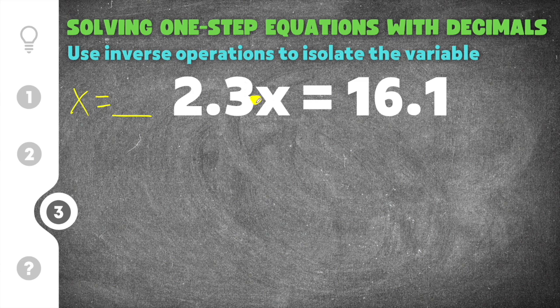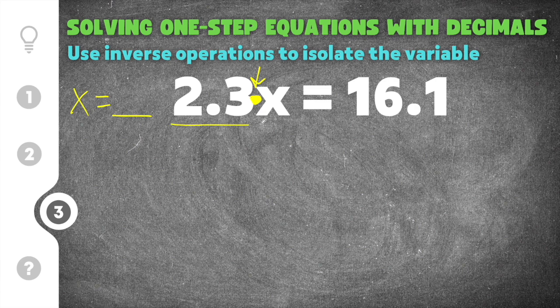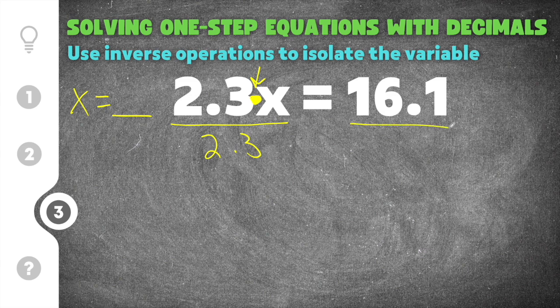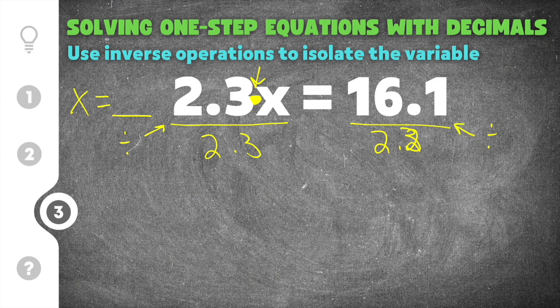So the opposite of multiplication, this is multiplication, the opposite of that is to divide. So I'm going to divide by 2.3. So 2.3 times x divide by 2.3. Whatever you do to one side you do to the other. So we're going to do divide by 2.3 here. And this little fraction bar, that just means divide. So I'm just going to go ahead and use that to show division. So this just means divide.